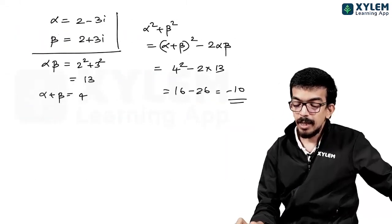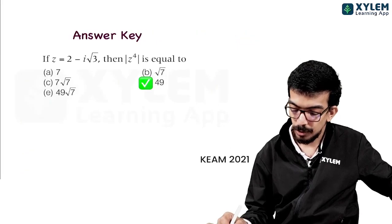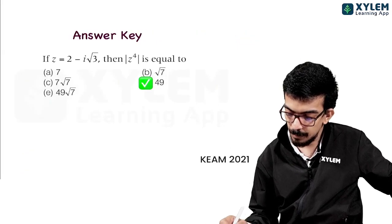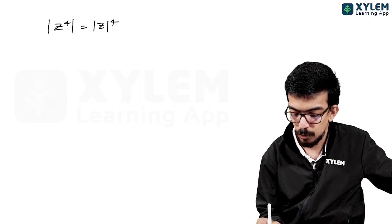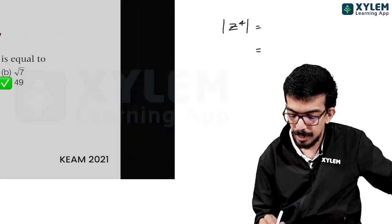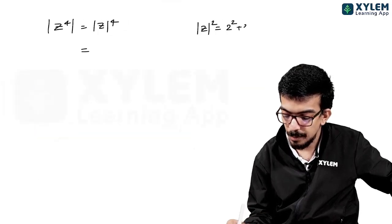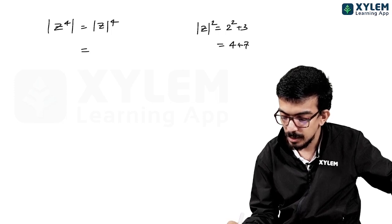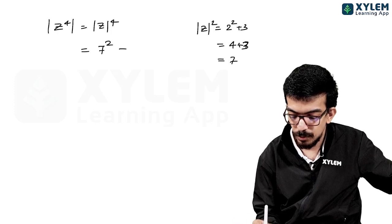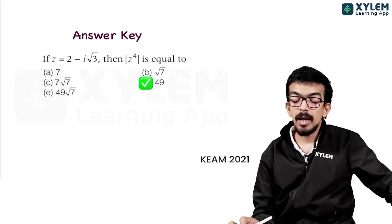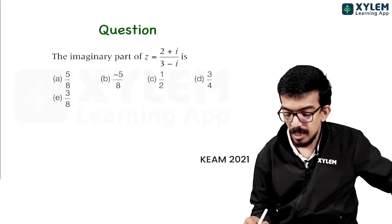Next simple question: Z equals minus i root 3. Modulus of Z raised to 4. Modulus of Z squared: 2² + (√3)² = 4 + 3 = 7. So modulus of Z raised to 4 is 7 squared, which is 49.